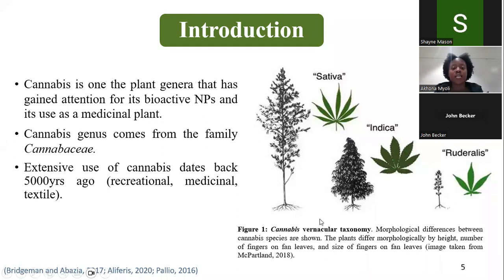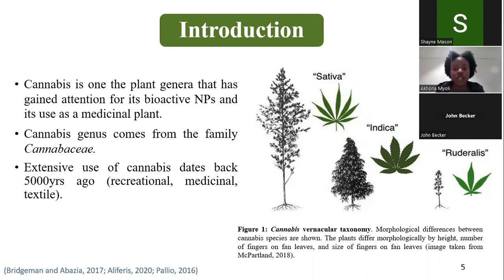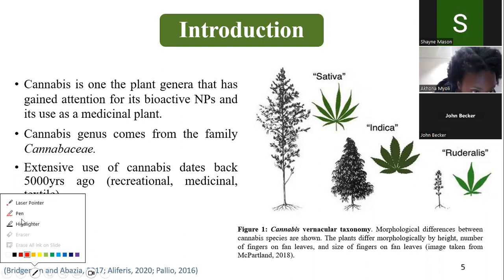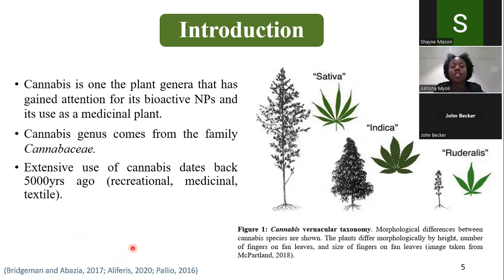There is a group of scientists who believe that cannabis is divided into three species — sativa, indica, and ruderalis — and another group who believe cannabis is divided into two species: sativa and indica. There's a lot of confusion and debate regarding this topic. However, despite the classification debates, the extensive use of cannabis dates back to 5,000 years ago, where it was used for recreational, medicinal, and textile uses.